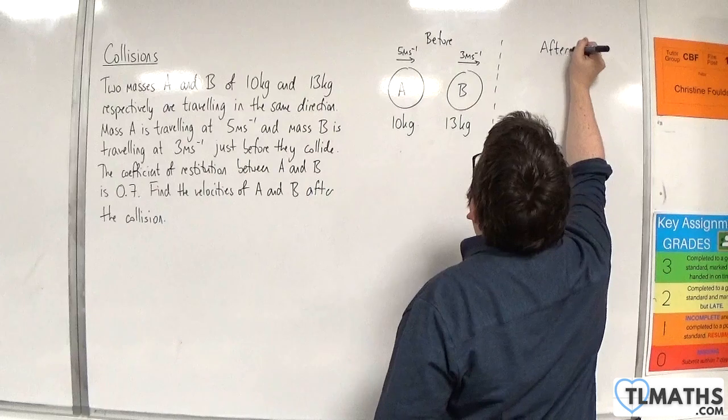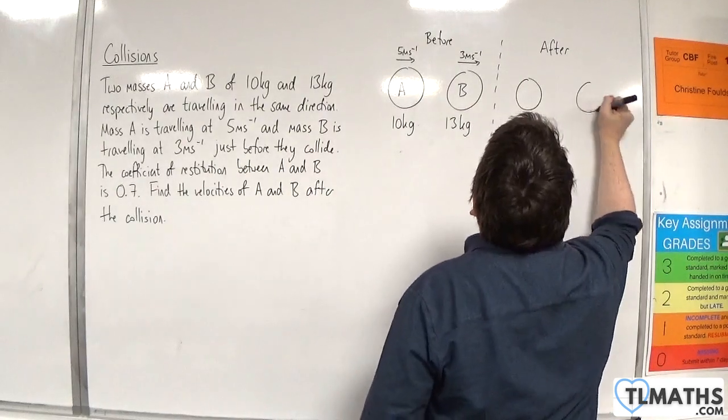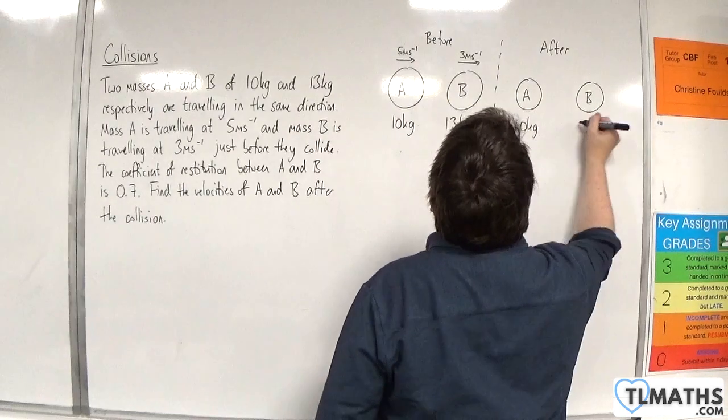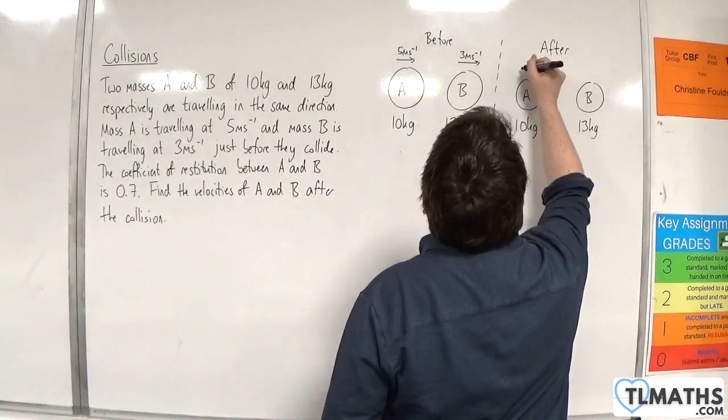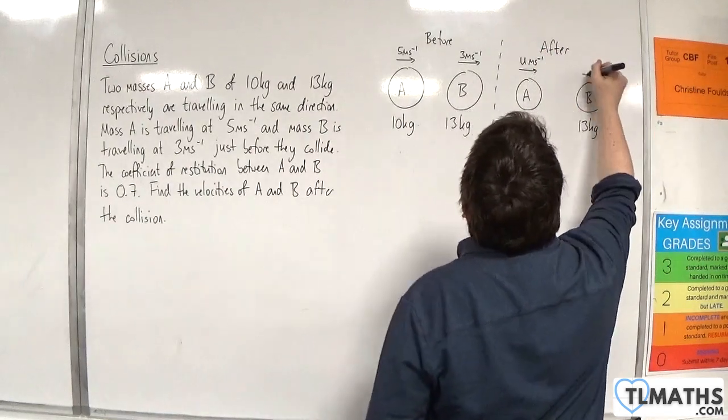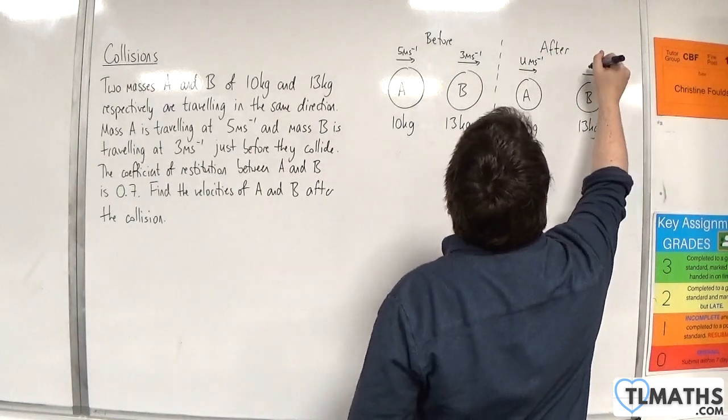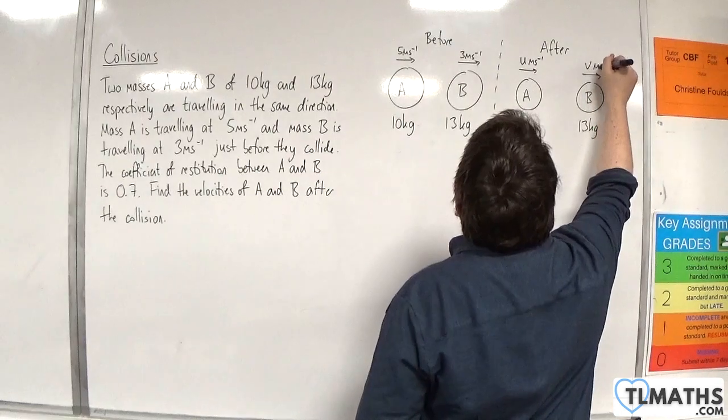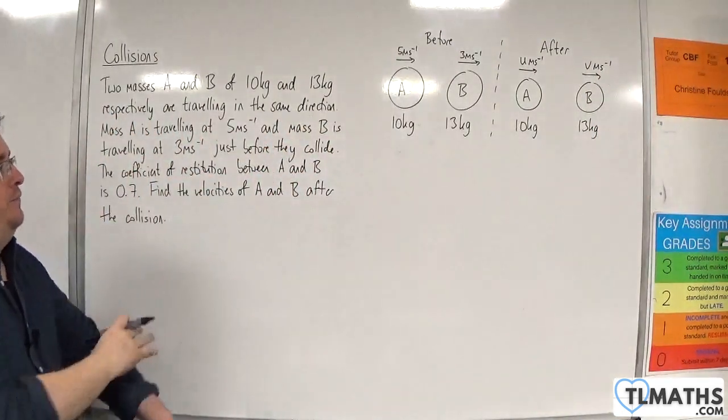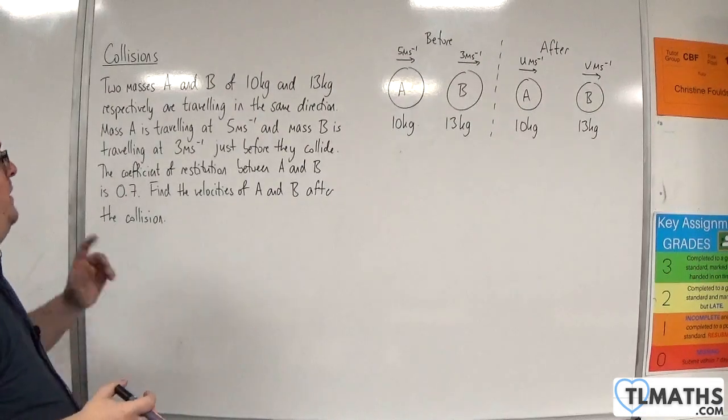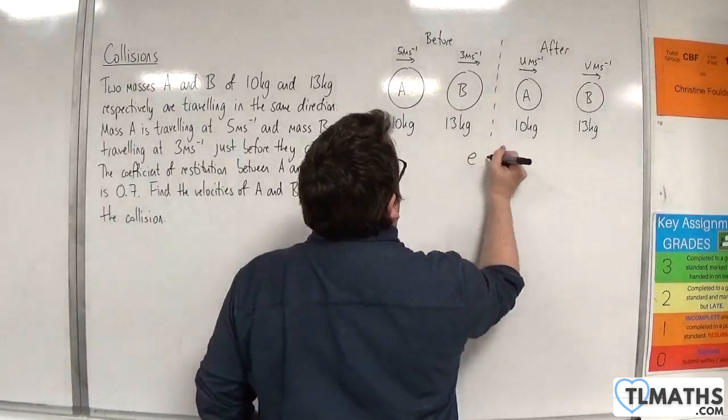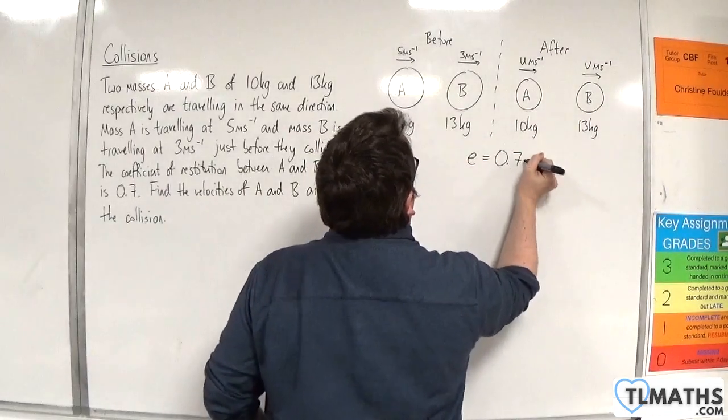Therefore, after we're going to have particles A and B with the same mass, but we don't know U, the velocity of A after the collision, and we don't know V, which I'm going to refer to as the velocity for B after the collision. But we do know the coefficient of restitution, it's 0.7. So E is 0.7.